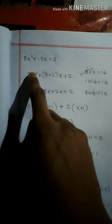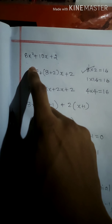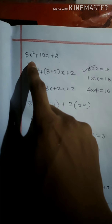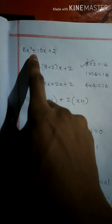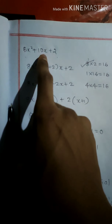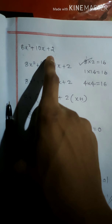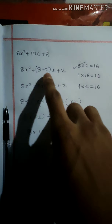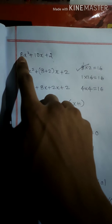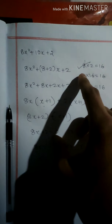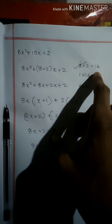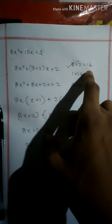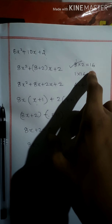Now let's do another example: 8x² plus 10x plus 2. The first step is to multiply the first and last numbers — that means 8 into 2 is equal to 16.